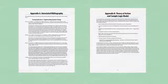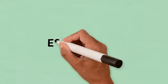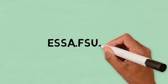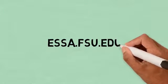Additional tools in the self-study guide include Appendix A, an annotated bibliography which correlates to each of the areas in the scoring guide, and Appendix B, which provides a description of theory of action and an example of a logic model. References are also provided in the guide. For more information, visit essa.fsu.edu.